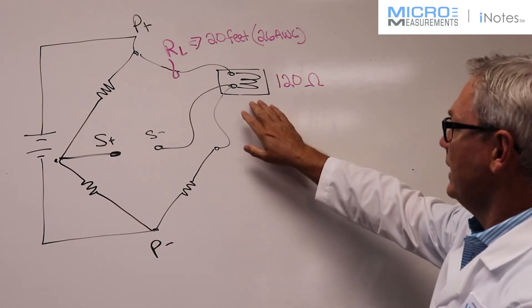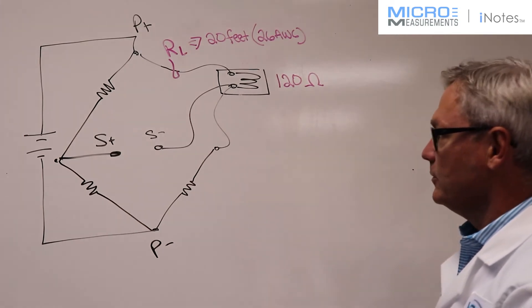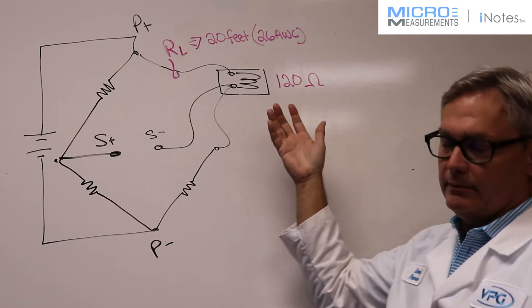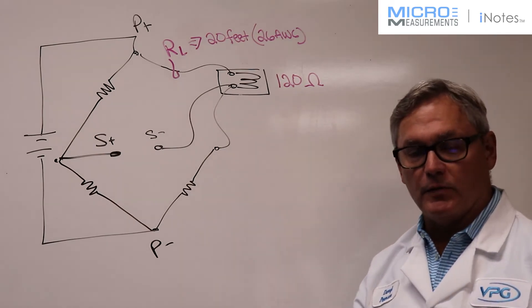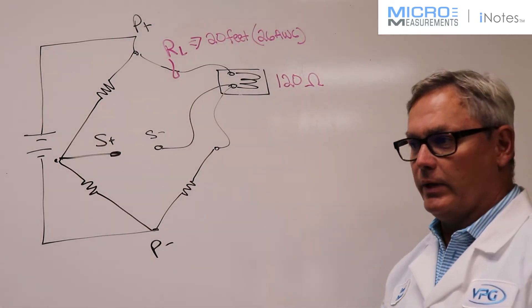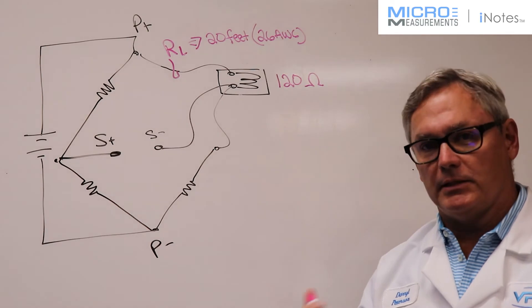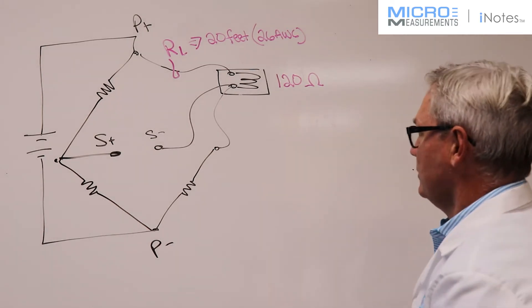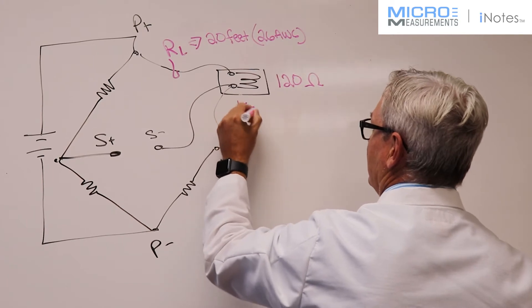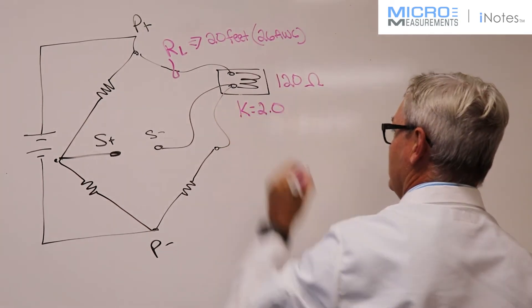The other assumption I'm going to make is that the gauge factor for the strain gauge is going to be equal to two. Typically Constantan gauges are going to have a gauge factor close to two. Karma is going to be pretty close to two as well. And if we assume it's 2.0, then that makes the math a little bit easier for us. So I'm going to call that K and assume that's equal to 2.0.